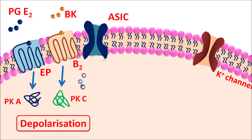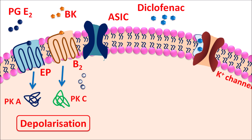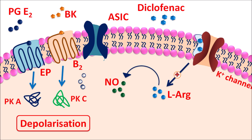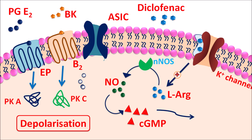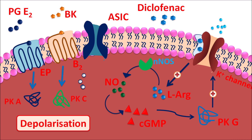Nociception is controlled by ATP-sensitive potassium channels, which have a special binding pocket for diclofenac. When diclofenac binds, it activates these channels, stimulating L-arginine — a precursor for nitric oxide. Nitric oxide synthase converts L-arginine to nitric oxide, which stimulates the guanylyl cyclase pathway, releasing cyclic GMP. Cyclic GMP activates protein kinase G, increasing expression of potassium channels. Potassium efflux causes hyperpolarization of nociceptive neurons, resulting in decreased nociceptive stimuli and desensitization of nociceptive receptors.